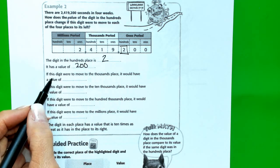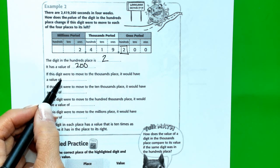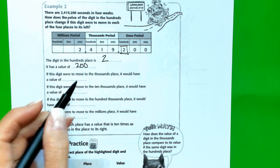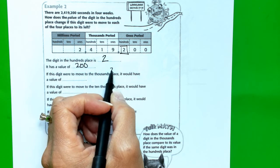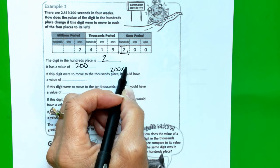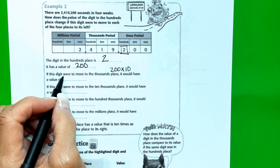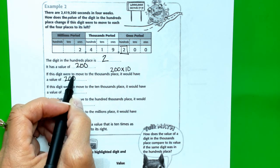If this digit were to move to the thousands place, it would have a value of, well, it would be 200 times 10 or 2,000.